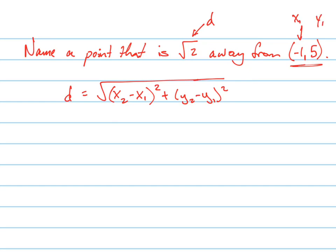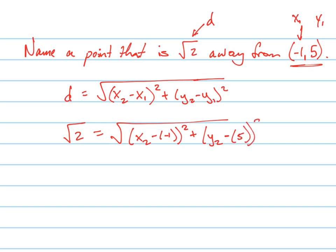So we need to find the other point, x2 and y2. Let's see if we can plug in these numbers. The distance equals the square root of (x2 minus negative 1) squared plus (y2 minus y1) squared. So there's the equation.